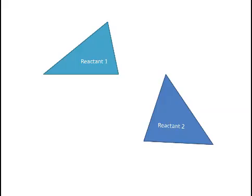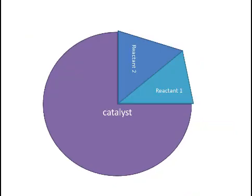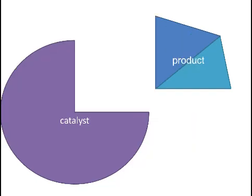Now what a catalyst does is it holds the reactants in a way that makes it easier for them to bond with one another. They don't have to hit one another so hard to bond because the catalyst is there to help them with the connection.